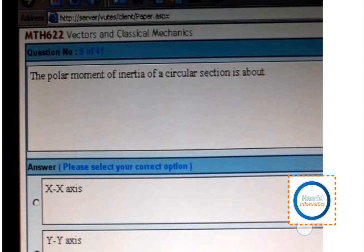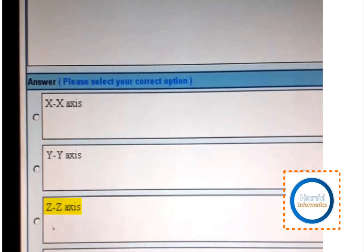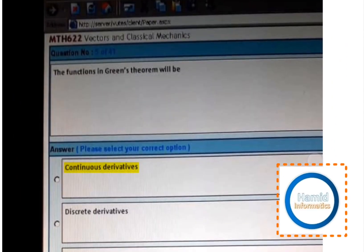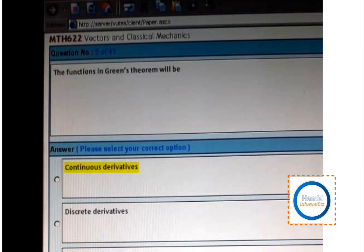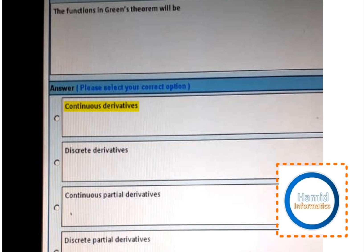The polar moment of inertia of a circular section is about z-z axis. For Grains theorem, the function will have continuous derivatives.